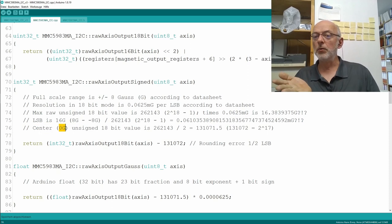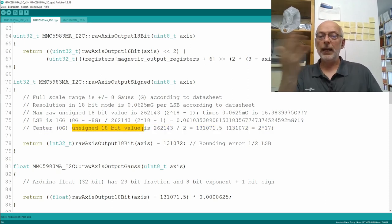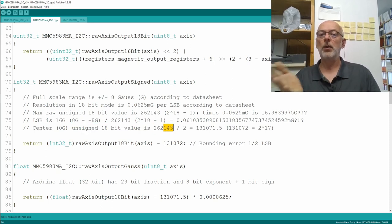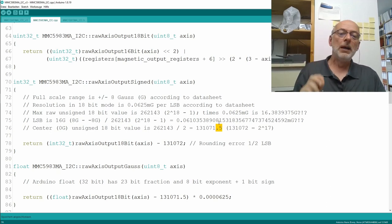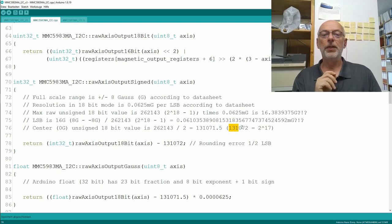Anyways, the center, so 0 Gauss of our unsigned 18-bit value is, of course, 262,143 divided by 2. And that's, unfortunately, not an integer. That's 131,071.5. The nearest integer value is 131,072. That's 2 to the power of 17. And so, accepting a rounding error here of half a least significant bit, I define our signed raw axis output as our raw axis output, 18 bits, minus 131,072. And that should, in theory, put 0 Gauss at the middle of our value range.